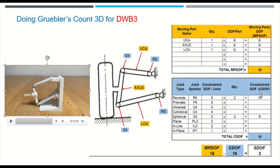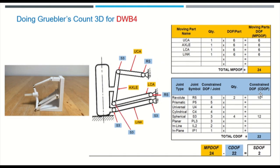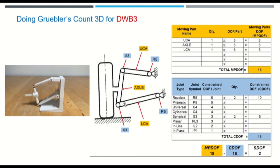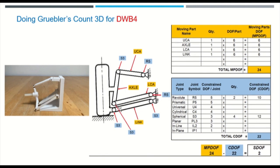Now let's say I wanted to now apply torque to my tire and make sure that my mechanism is not steerable anymore, like, for example, a rear suspension. So I just add another link, basically. Now that brings the moving parts degrees of freedom from 18 to 24.